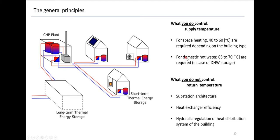What do we ultimately need in buildings? For space heating, between 40 and 60 degrees depending on the building type and redistribution system — radiators or low-temperature heating makes a difference. For domestic hot water, we need higher levels if we have a storage tank due to legionella issues. But what you do not control as an operator is the return temperature. Each substation gives you back whatever it returns — if one gives back 75 degrees, you cannot do much. What influences this return temperature can be the substation architecture, the efficiency of heat exchangers, and the hydraulic regulation of the building's heat distribution system.